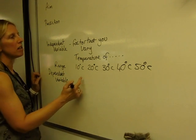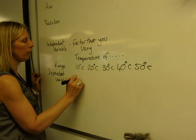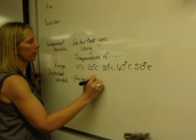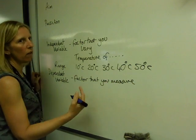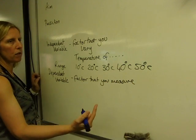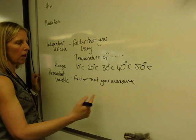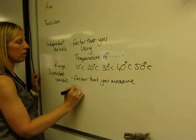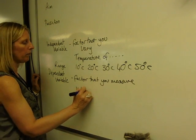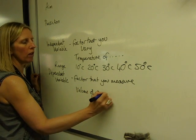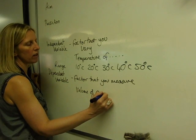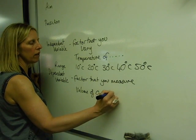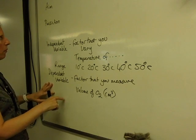The dependent variable is the factor that you measure. So we could be measuring the volume of oxygen produced in centimeters cubed, and this needs units. So the volume of oxygen collected in a minute, for example, and then units. Okay, so that's the dependent variable.